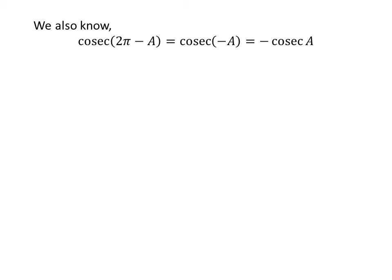We know the values of cosecant of x repeat after the interval of 2 times pi. So cosecant of 2 times pi minus a is equal to cosecant of minus a. We also know the trigonometry identity cosecant of minus a is equal to minus cosecant of a.